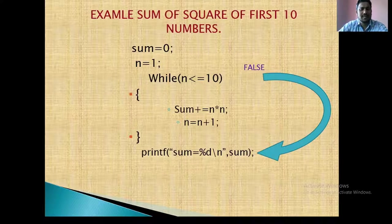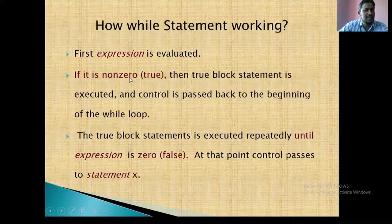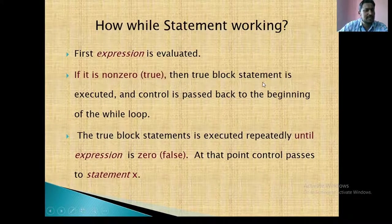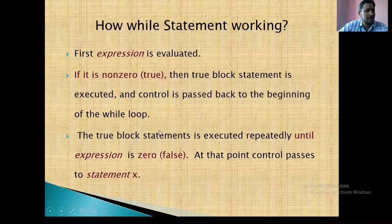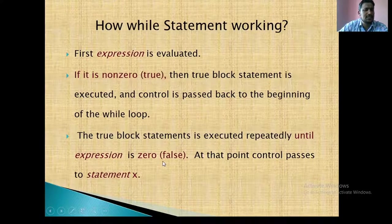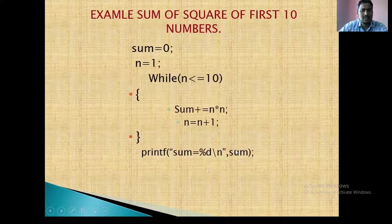This is the working procedure. If it is non-zero then true block statement is executed and control is passed back to the beginning of the while loop. The true block statement executed repeatedly until expression is 0, that means false. At the time control passes to statement x.